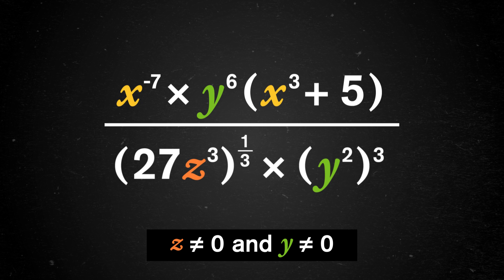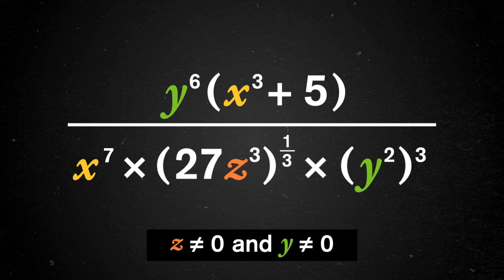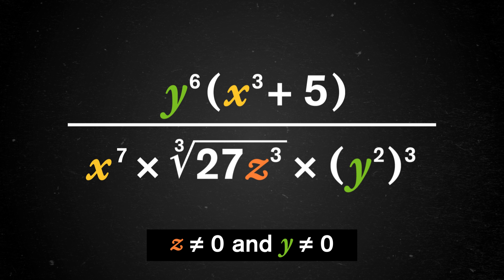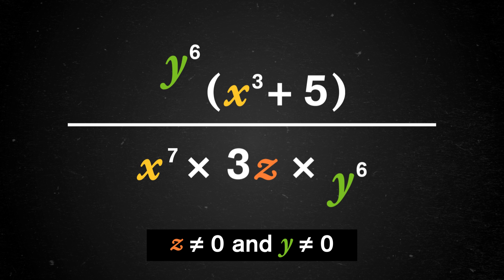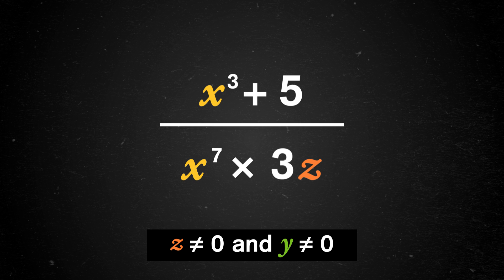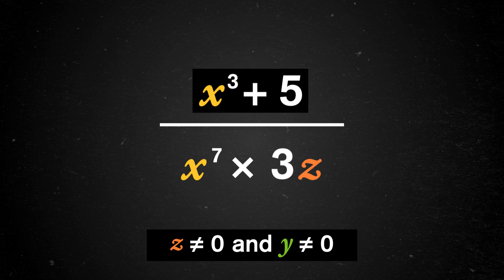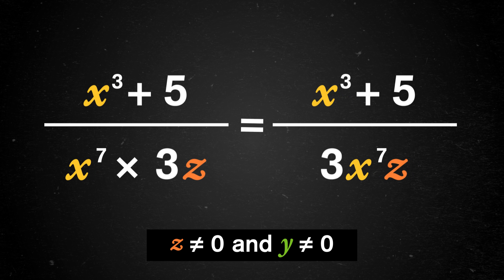So say you're asked to work with something like this — that's just a mess! Let's start by making use of our rules, starting with whichever piece feels easiest. Handling those negative exponents seems like a good start: there's an x to the negative 7, and that's equal to 1 over x to the positive 7. Next, fractions: there's a 27z cubed to the 1 third, so take the cube root of 27z cubed. Well, 3z multiplied by itself 3 times gives 27z cubed, so you have 3z right there. There's still a y squared all cubed, which is really y to the sixth. And there's a y to the sixth in the numerator as well, so we have a y to the zero, and that's just 1. We've got x to the cube plus 5 all over x to the seventh, times 3z. It's tempting to try to cancel some of those x's, but we can't because all of x cubed plus 5 is being divided by the denominator, not just the x cubed. So we've gone as far as we can go.